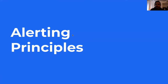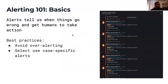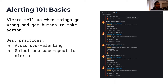Let's get into the first section: alerting principles. Just so everyone starts on equal footing - alerts are basically an important part of any monitoring system because they tell us when things go wrong and when things need human attention. This could be when something crashes, when you're consuming too many resources, when there's an outage, or when users are reporting performance degradation. It could also be an increase in support tickets. Alerts help us know about problems and get humans to take action as soon as possible.